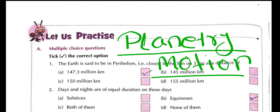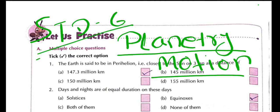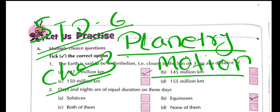Welcome again to Bored Academy, dear students. This is Standard 6 and this is Geography Chapter 3 — Planetary Motion, Rotation and Revolution.